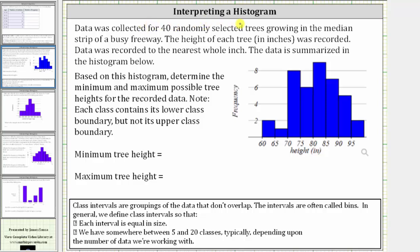Data was collected from 40 randomly selected trees growing in the median strip of a busy freeway. The height of each tree in inches was recorded. Data was recorded to the nearest whole inch. The data is summarized in the histogram below.